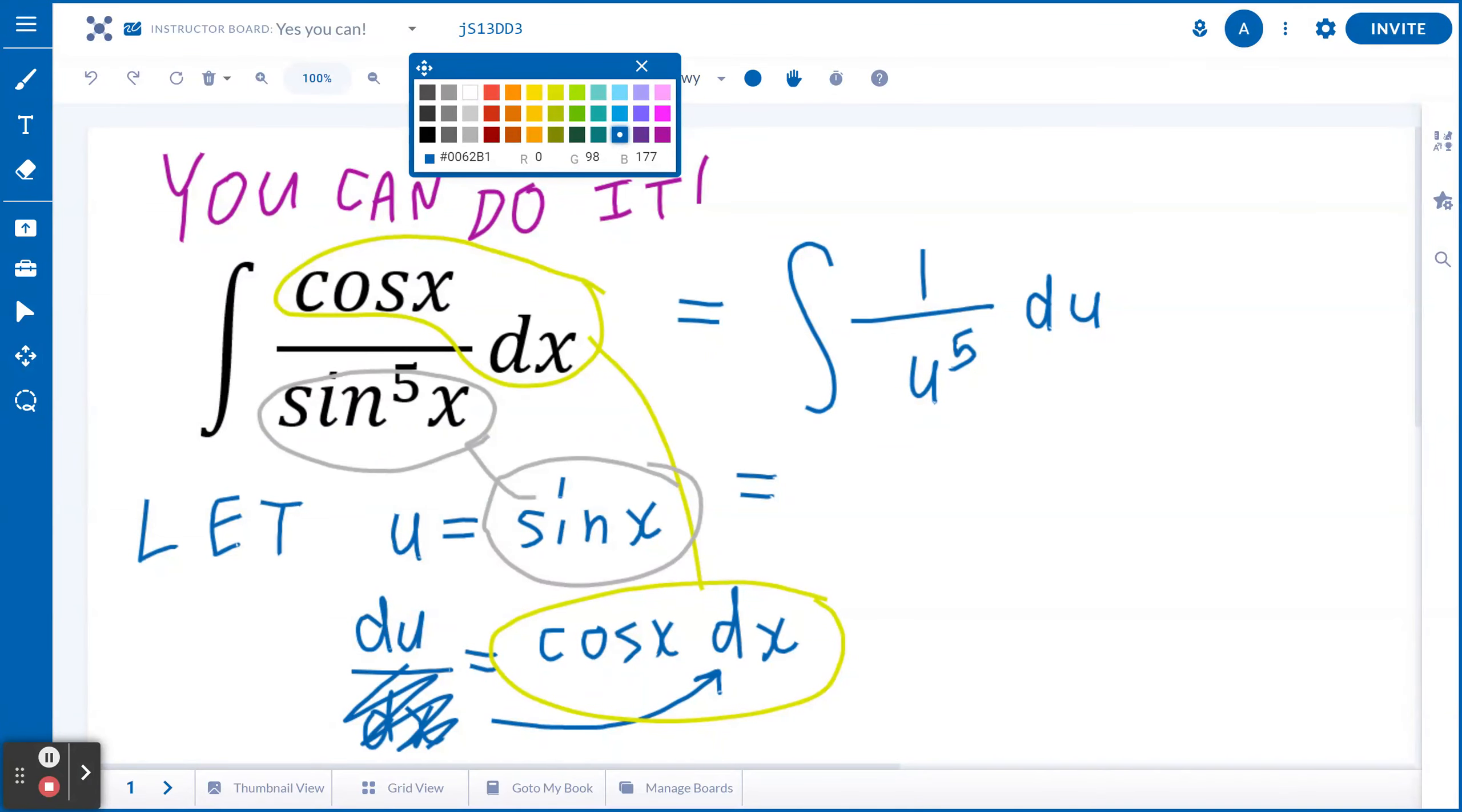Now, when you find the antiderivative of u to the power of negative 5, you have to add the exponent by 1 and divide by the new exponent. So in this case, 1 divided by u to the power of 5 is u to the power of negative 5. So this is going to be u to the power of negative 5.